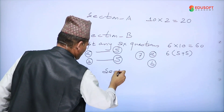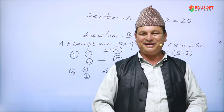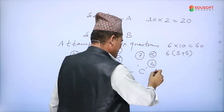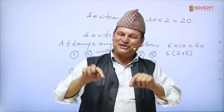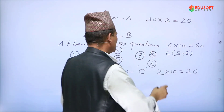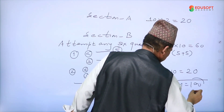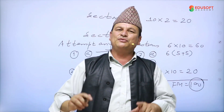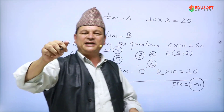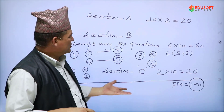Section C has comprehensive long answer questions with case studies. The full marks is 100, and you need to secure at least 45 percent to pass.